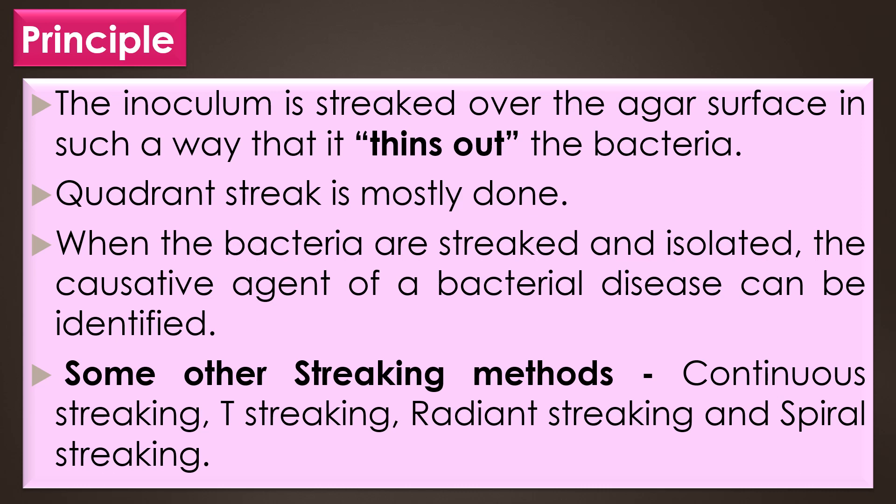When the bacteria are streaked and isolated, the causative agent of the bacterial disease can be identified. Apart from the quadrant streaking method, some other streaking methods are also used in the microbiological laboratory. They are continuous streaking, T-streaking, radiant streaking, and spiral streaking.